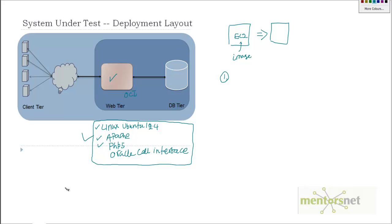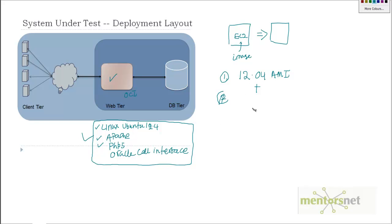My end goal is to install all these things. Option one: you can start with the Ubuntu 12.04 AMI, which gives you only the Linux operating system. That means if you start your EC2 instance with Ubuntu 12.04 you get nothing but Linux Ubuntu 12.4. Then once Linux is installed, you go to the Apache website and download and install Apache, then go to the PHP website and download and install PHP.